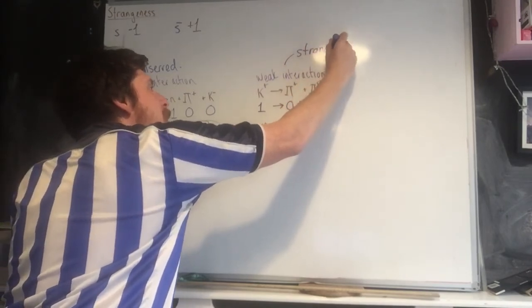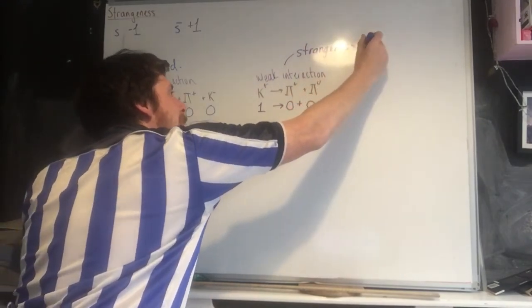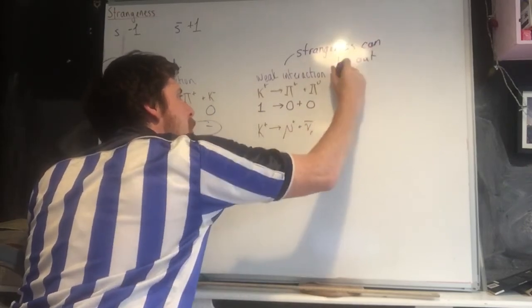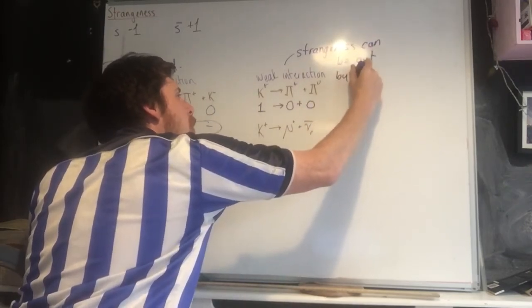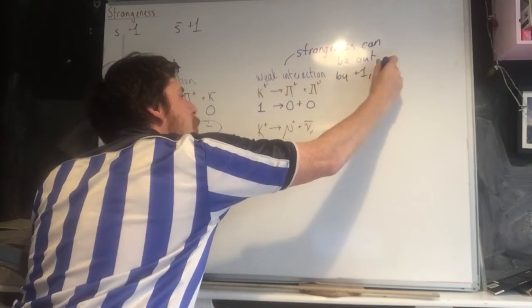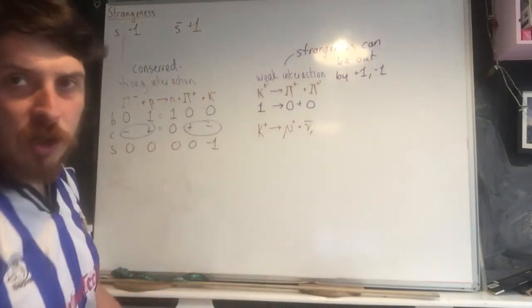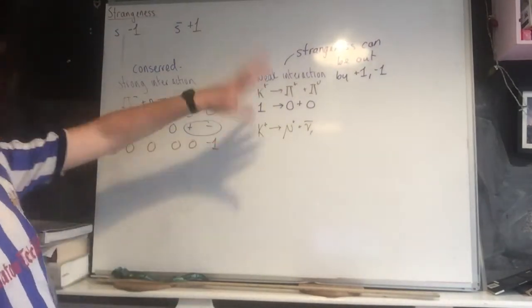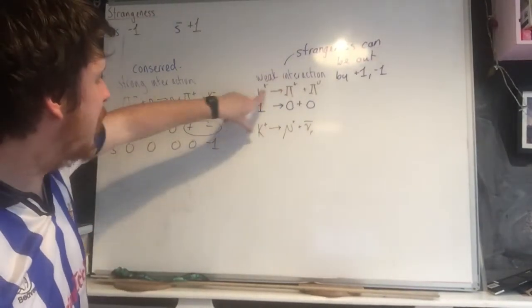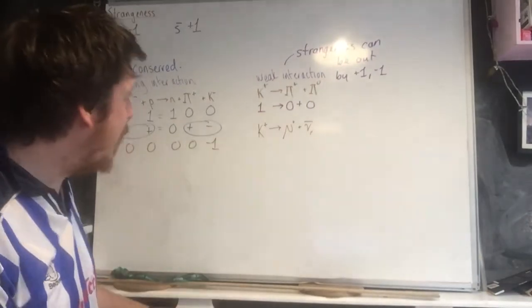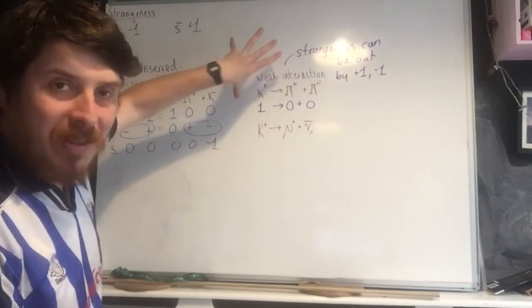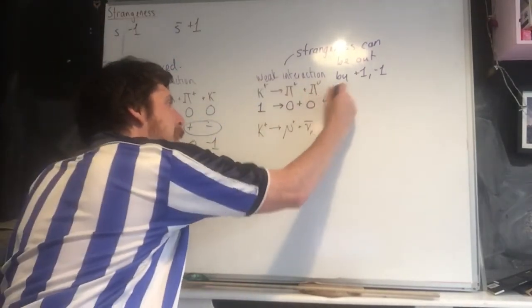Now strangeness can be out by one or minus one. In a weak interaction, strangeness does not have to be conserved. So that's fine. We've got positive charge there and positive there, so charge checks out. And we've got no baryons or leptons whatsoever in this instance, so that checks out. This reaction can happen.